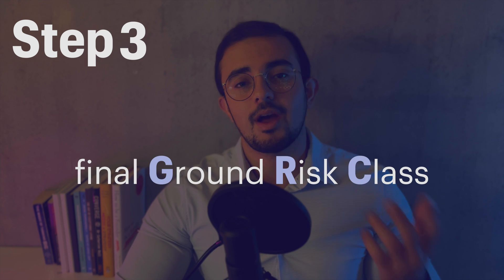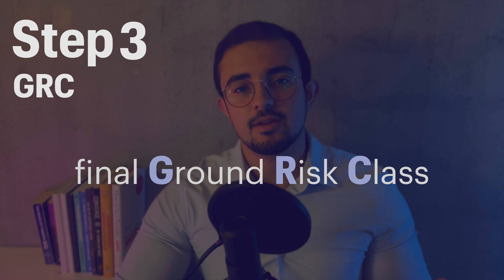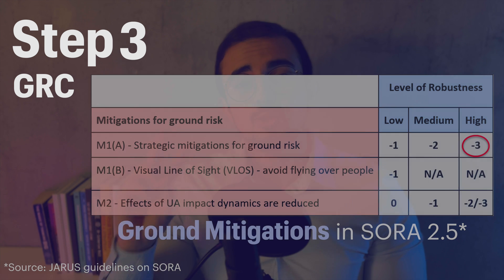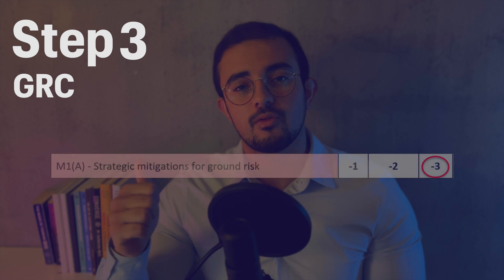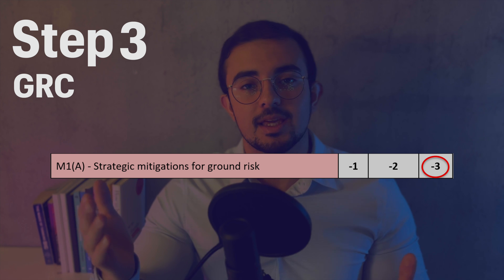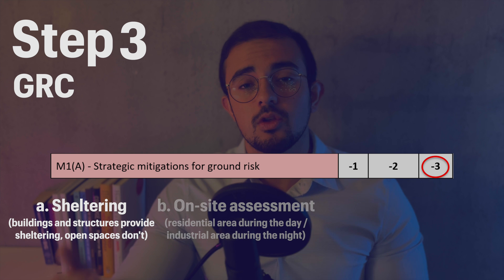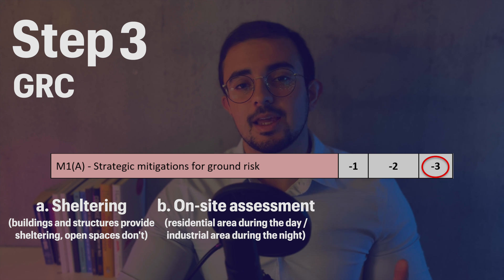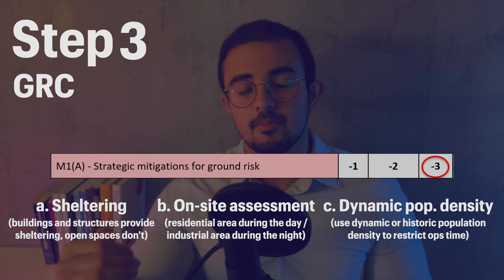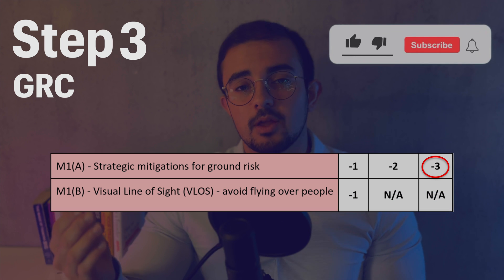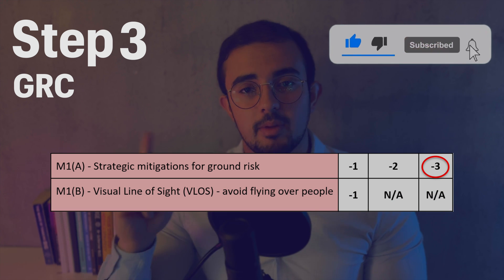Step 3 helps you identify your final Ground Risk Class, or GRC for short, by taking ground mitigations into consideration. Those mitigations allow you to reduce your Intrinsic Ground Risk Class by a few bands. There are two main types: M1 mitigations, also known as strategic mitigations, where, for example, buildings provide sheltering for people on the ground, or flying at night in an industrial area reduces effective population density. Also under M1, flying within visual line of sight, or VLOS, allows you to reduce your ground risk class by one point.